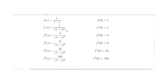Using the same pattern: 1 times minus 2 is minus 2, times the derivative of the denominator (minus 1) gives plus 2, and the power increases to minus 3. The next derivative: 2 times minus 3 is minus 6, times minus 1 is plus 6, power goes to minus 4. Then 6 times minus 4 is minus 24, times minus 1 is plus 24, power goes to minus 5. Then 24 times minus 5 is minus 120, times minus 1 is plus 120.